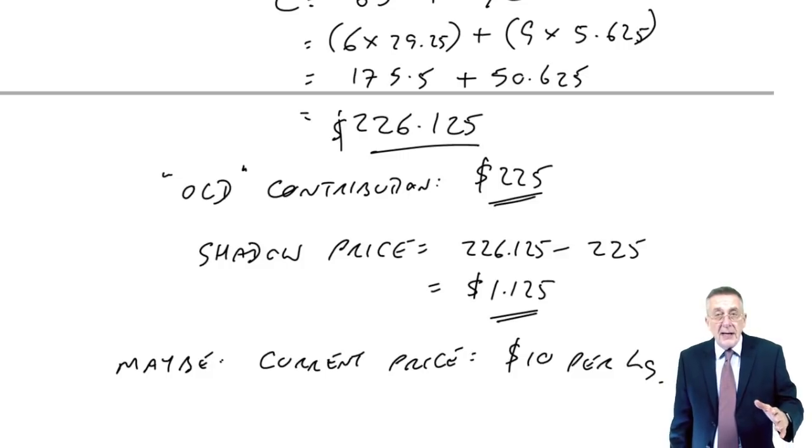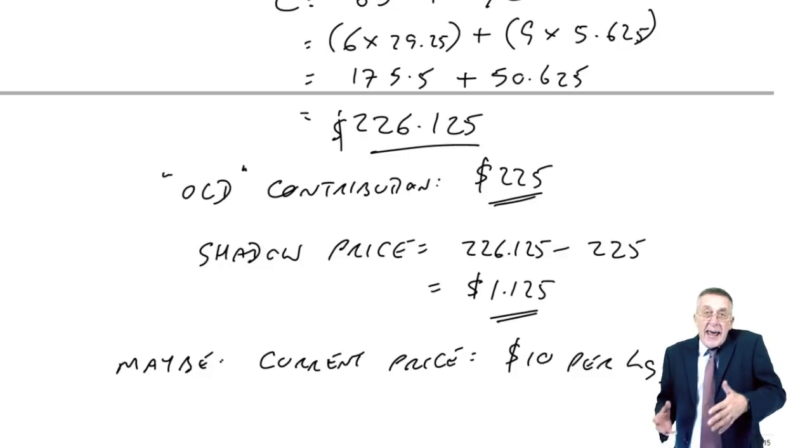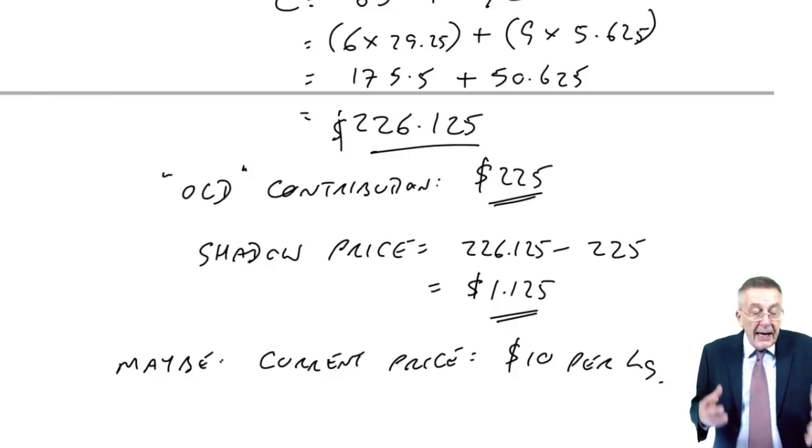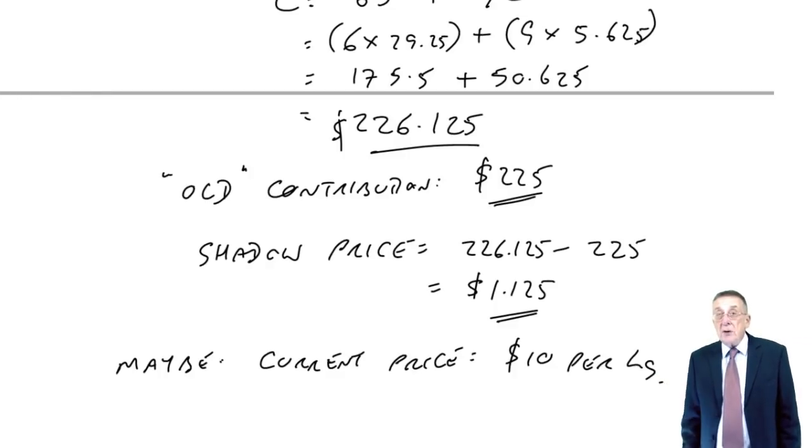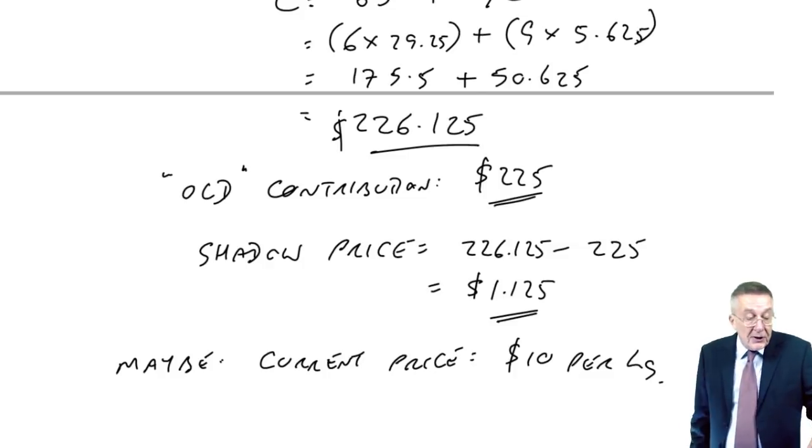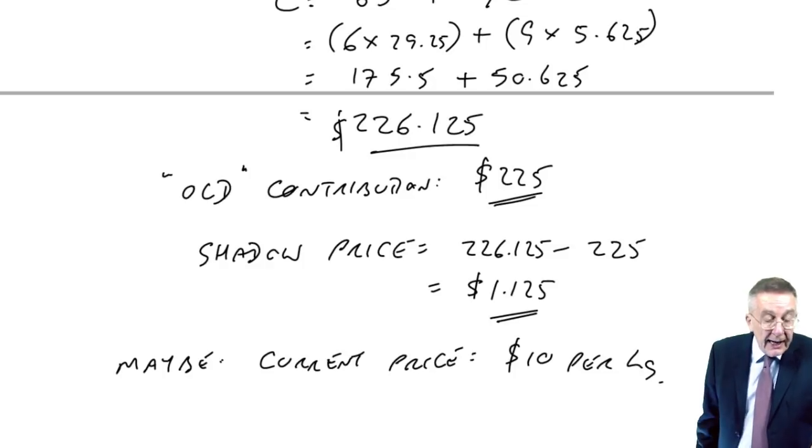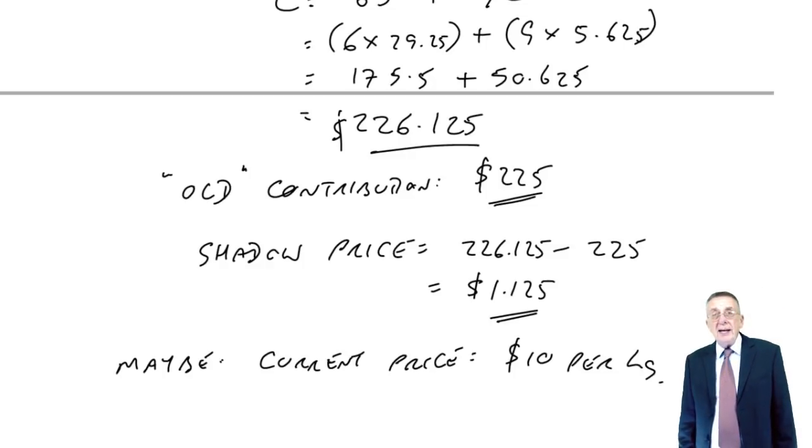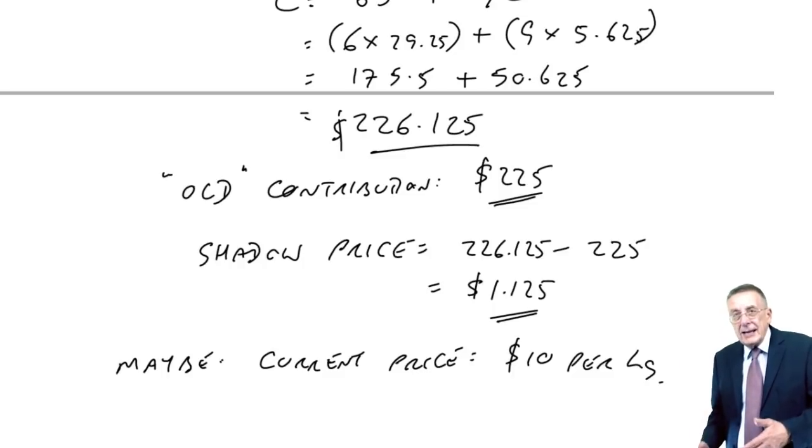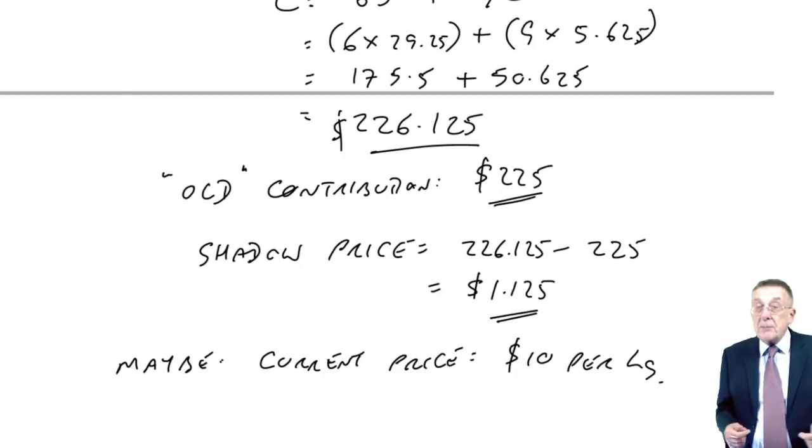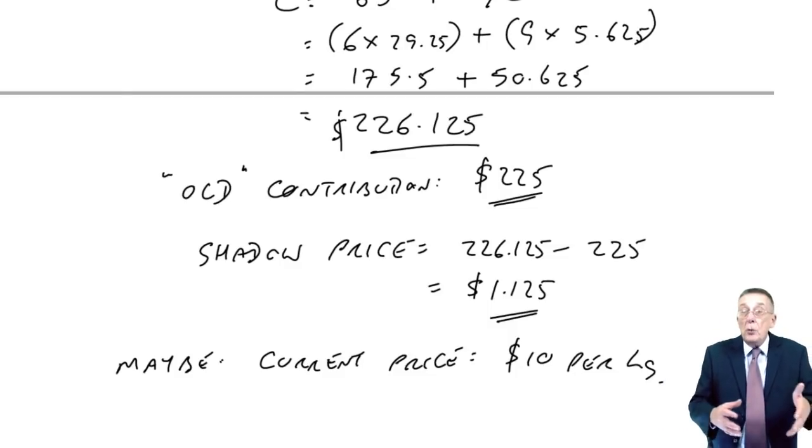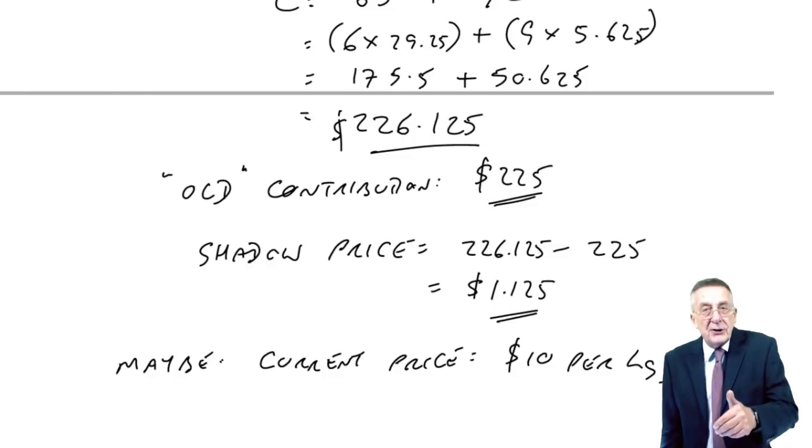And if we carried on paying $10 a kilo, if we could get one extra kilo and pay $10 for it, the normal price, then fine. The contribution would stay at $6 and $9 a unit. We'd make an extra $1.125. But of course, to buy extra, we're likely to have to pay more. Why was it limited in the first place? Perhaps there's only a limited supply at normal prices. We can always get more of anything, but perhaps we have to pay extra.